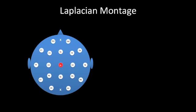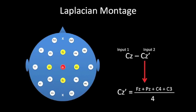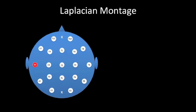One way to get around reference contamination is to use something called the Laplacian montage. The Laplacian montage is probably used least often among EEGers, mainly because it is very difficult to conceptualize. In general terms, we are always comparing one electrode position to an average of its nearest neighbors. For example, we would compare Cz to its four closest neighbors, expressing this as a first input Cz, and a second input Cz', which is an average of the four adjacent neighbors. Special consideration has to be given to electrode positions on the edge of the head where there are fewer adjacent neighbors.